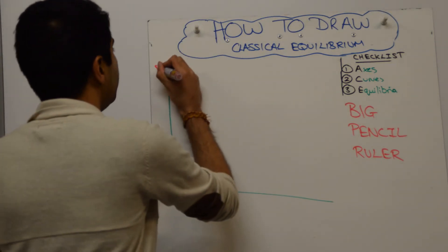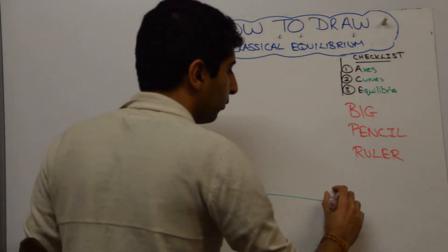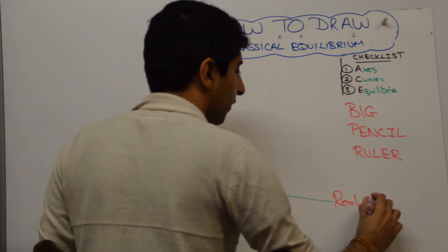Well, it's really simple. You do price level on the y-axis and real GDP on the x-axis.